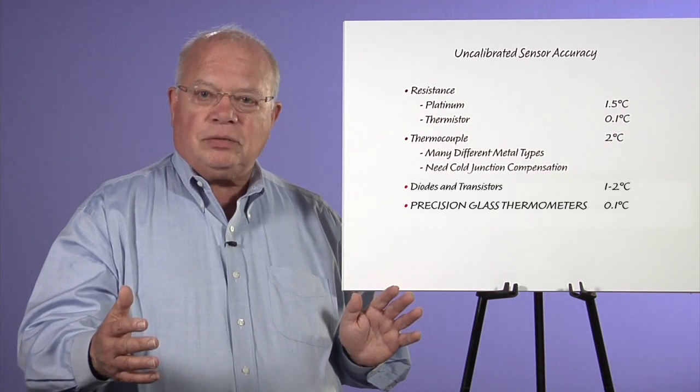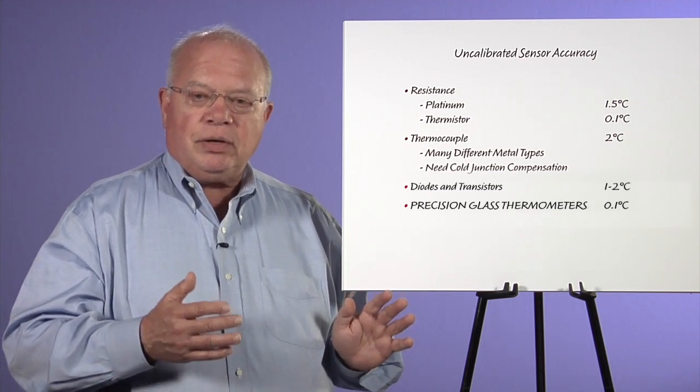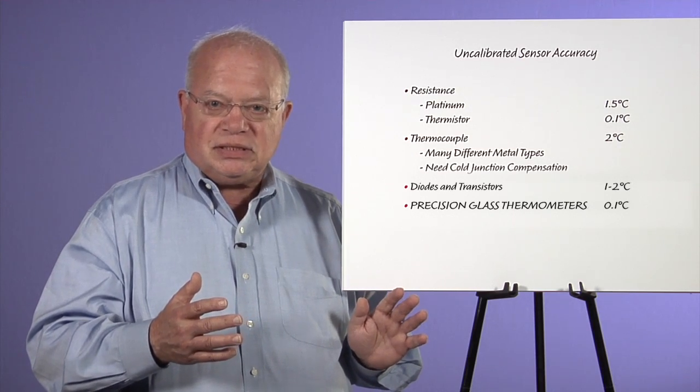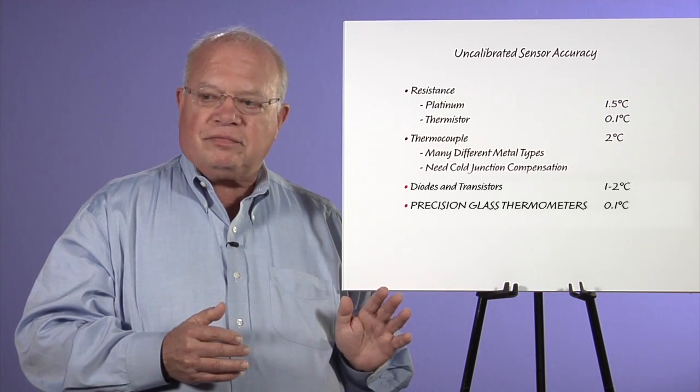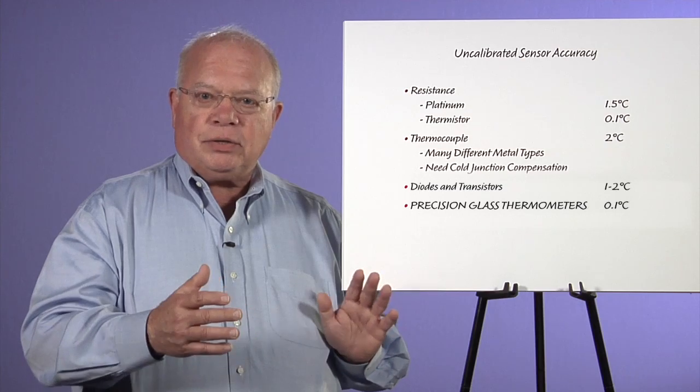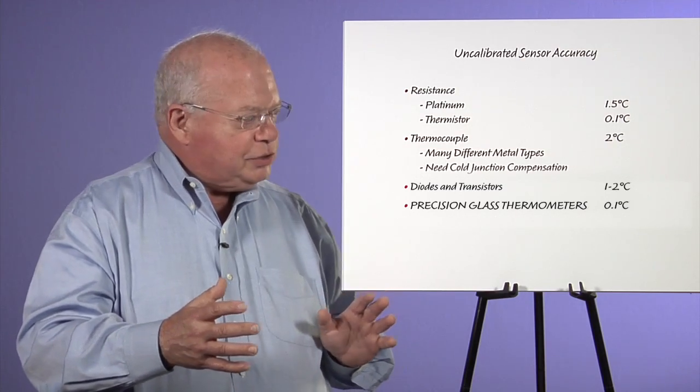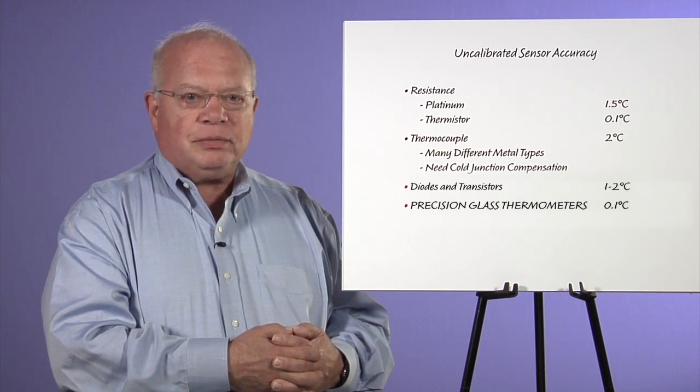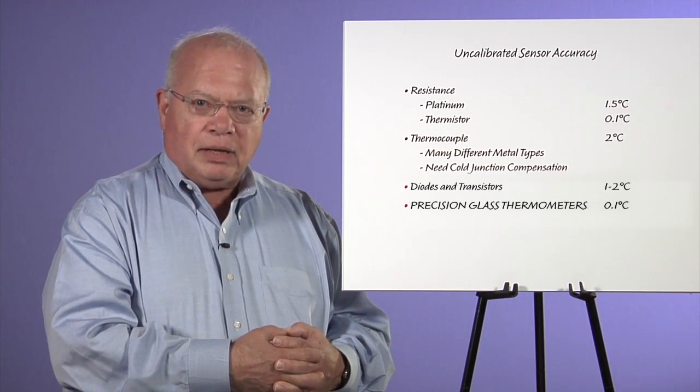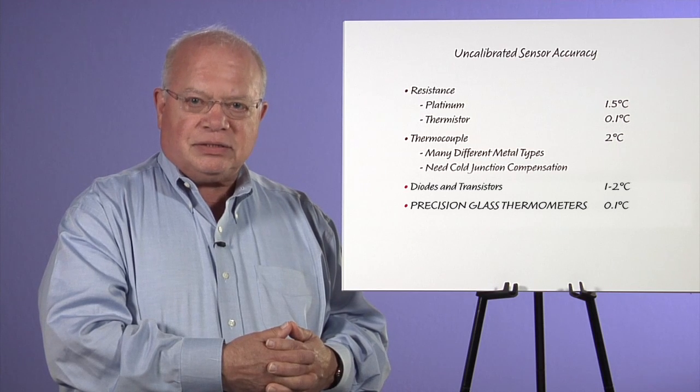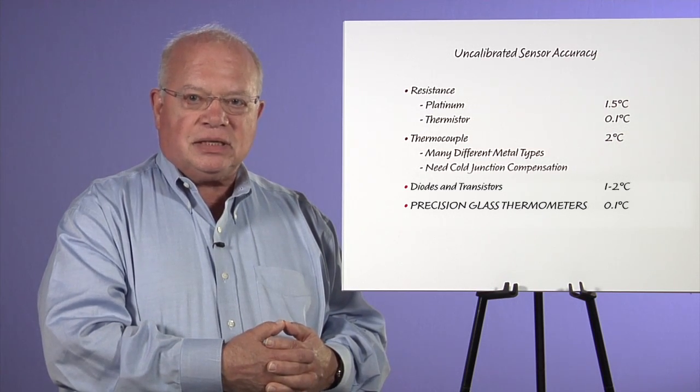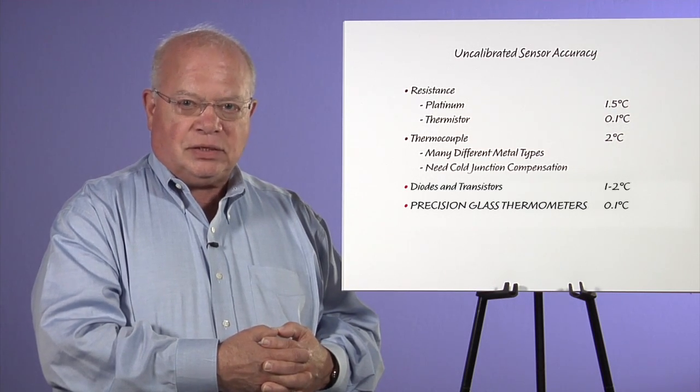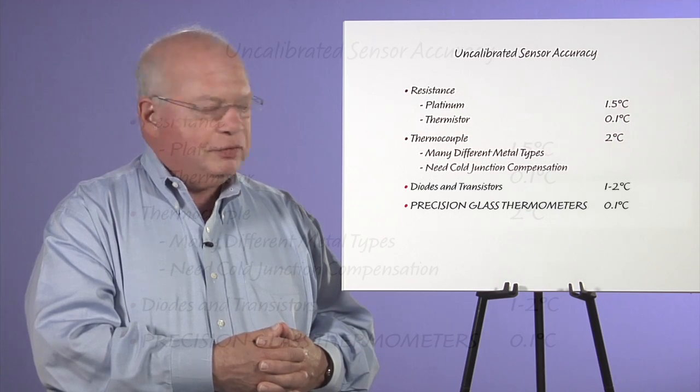If a thermocouple has a 400 degrees C range and you're only measuring 100 degrees C, you have one quarter of the max error because you're not using it over the full range. Diodes and transistors are not manufactured to be temperature sensors, but their characteristics are very consistent with temperature and can be converted into temperature.